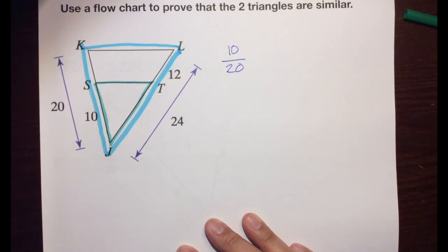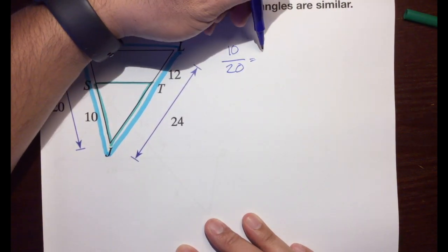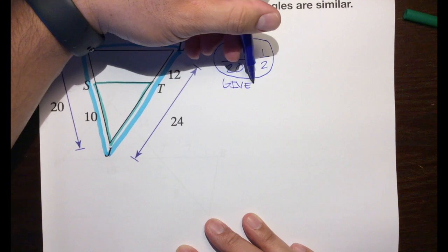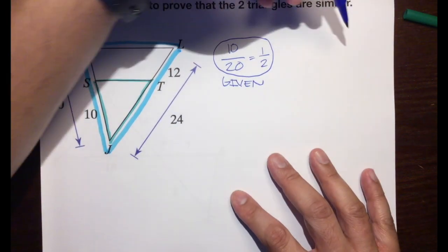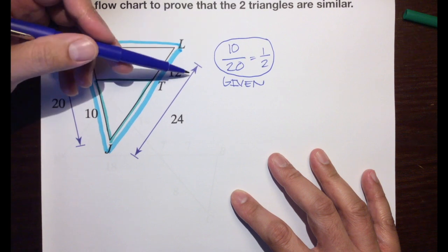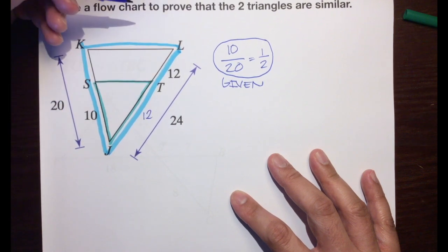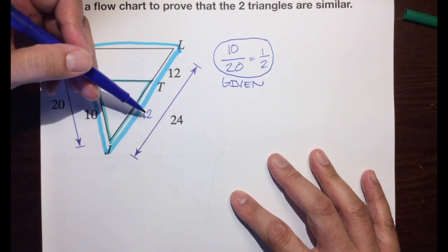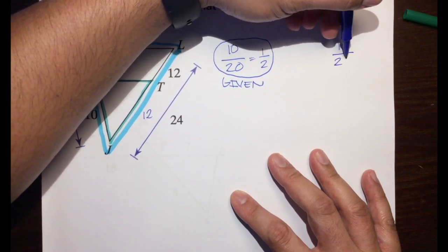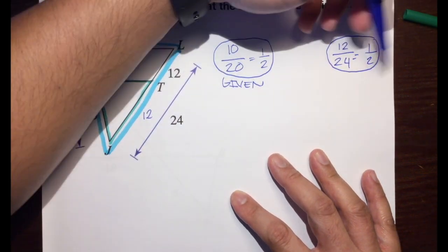10 over 20 simplifies to one half. The reason is given. Next, we don't know the length of the other side, but we can figure it out: if the entire length is 24 and one part is 12, then 24 minus 12 is 12 — so this side is also 12. So 12 over 24 also simplifies to one half. They gave us that information, so the reason is given.